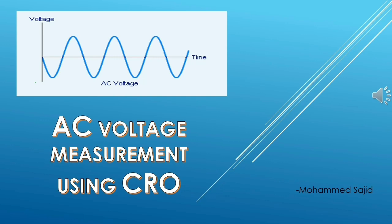If the frequency is 100, for example, that means in one second any one terminal will become 100 times positive and 100 times negative. So now we will learn how to measure this type of voltage using CRO.